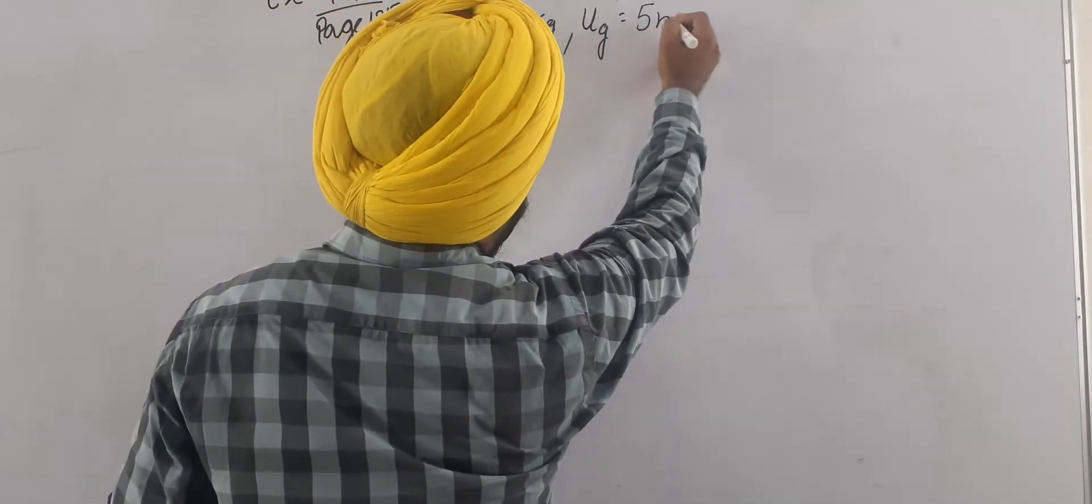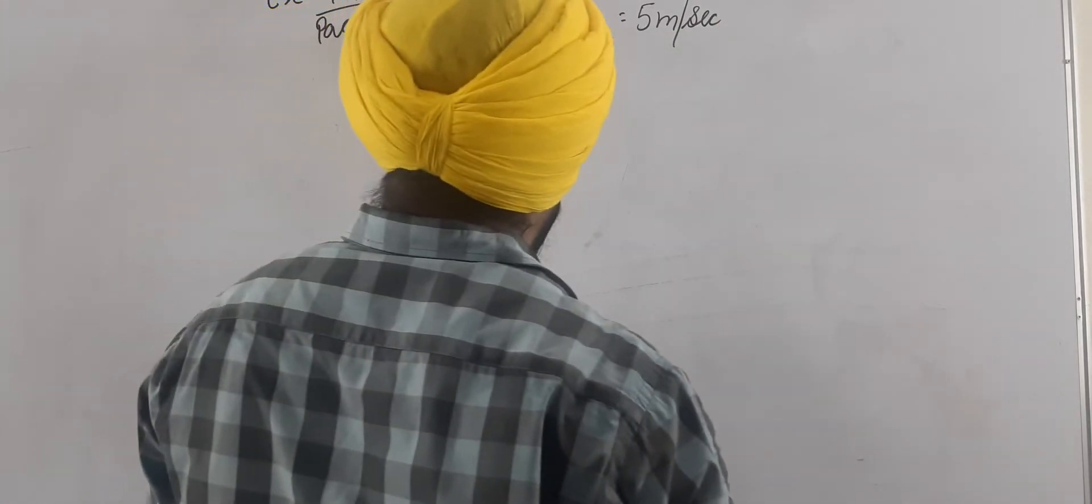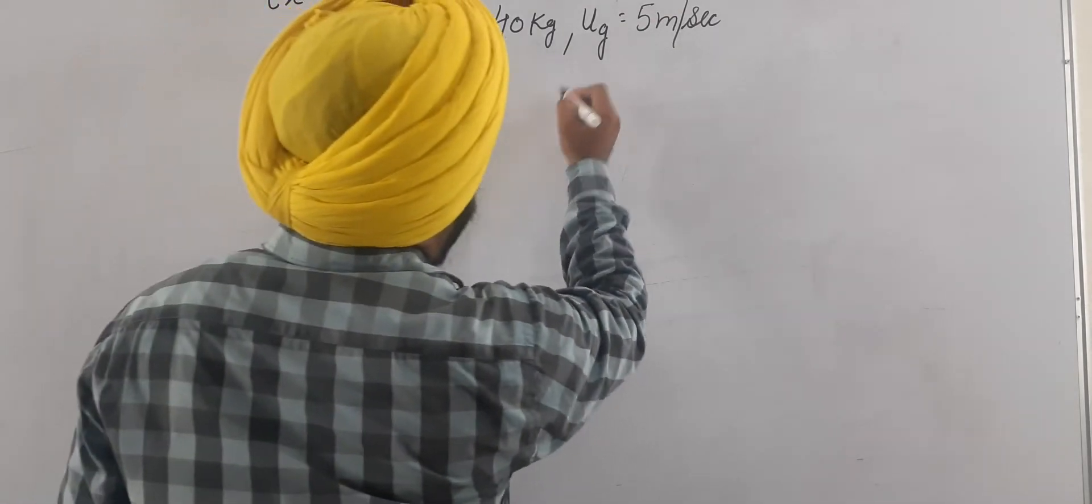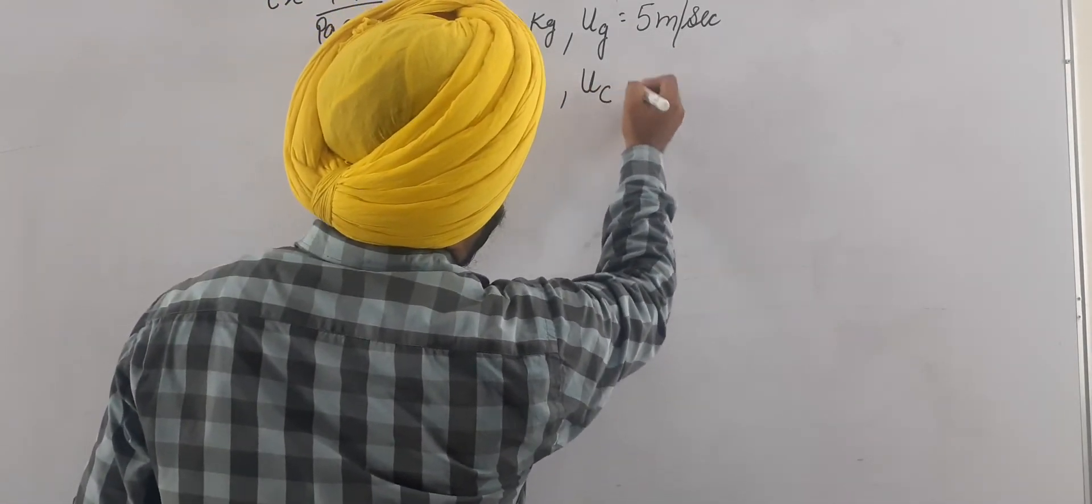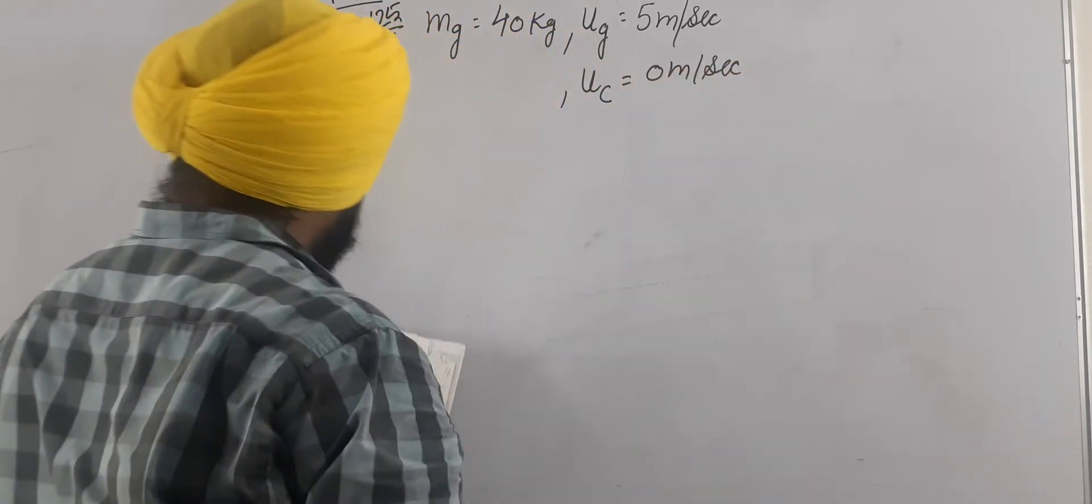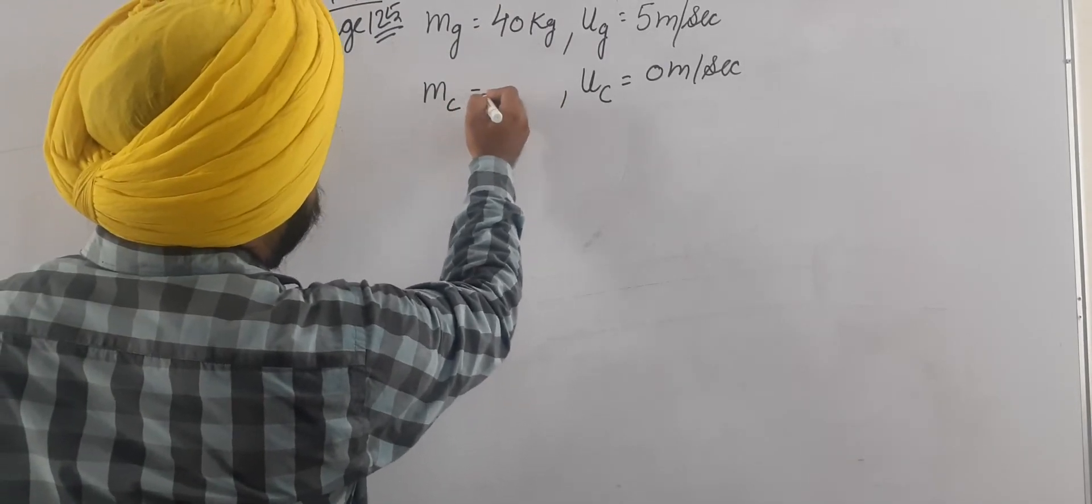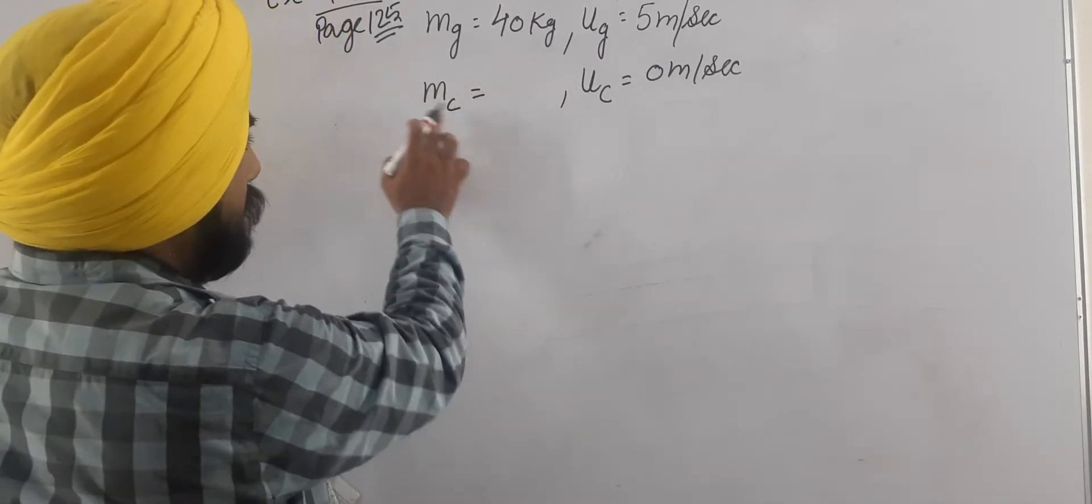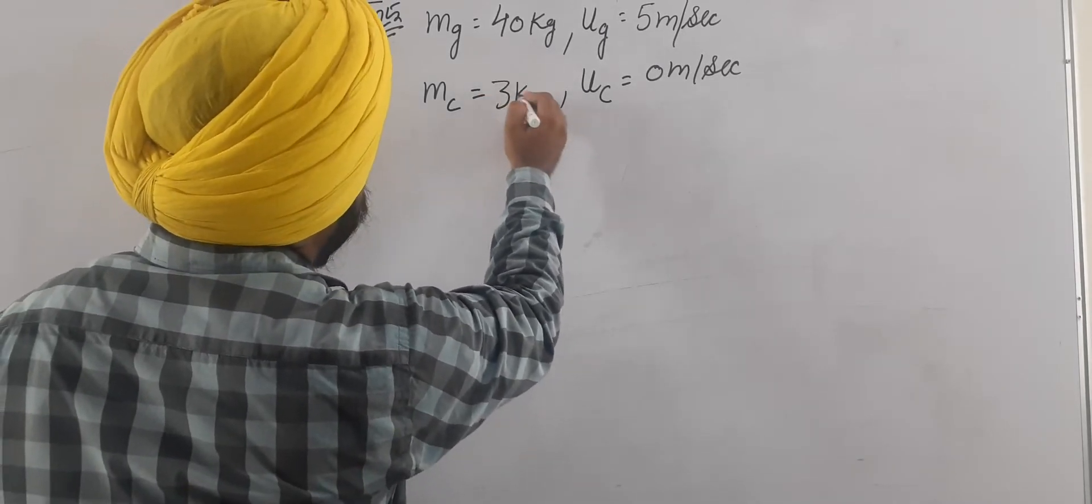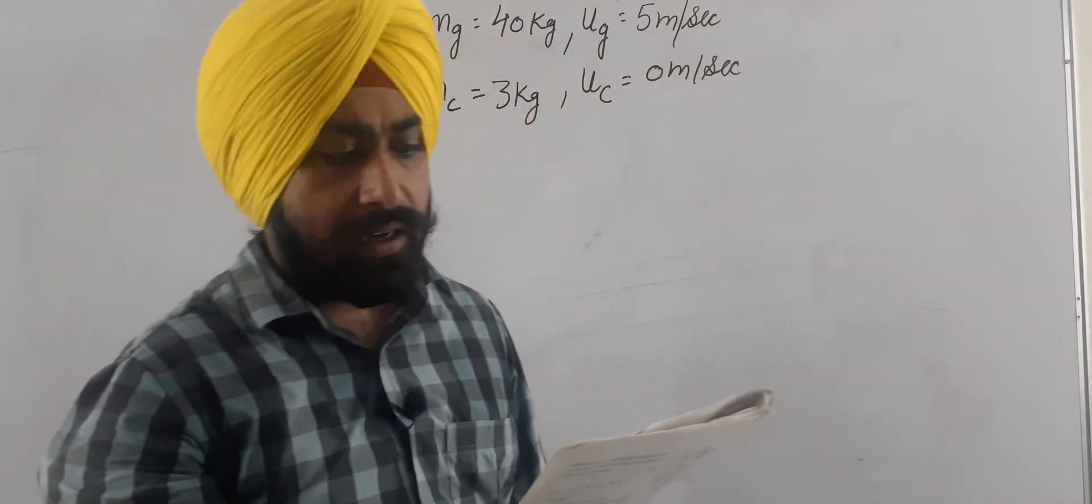That is 5 meter per second, and onto a stationary cart of frictionless, so cart's initial velocity uc is 0 meter per second, and the mass of cart mc is 3 kg.